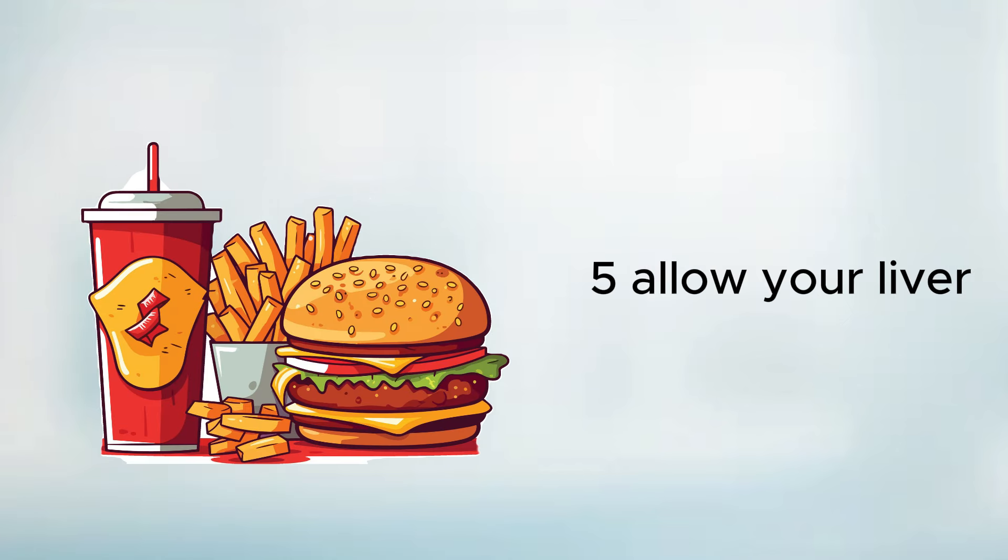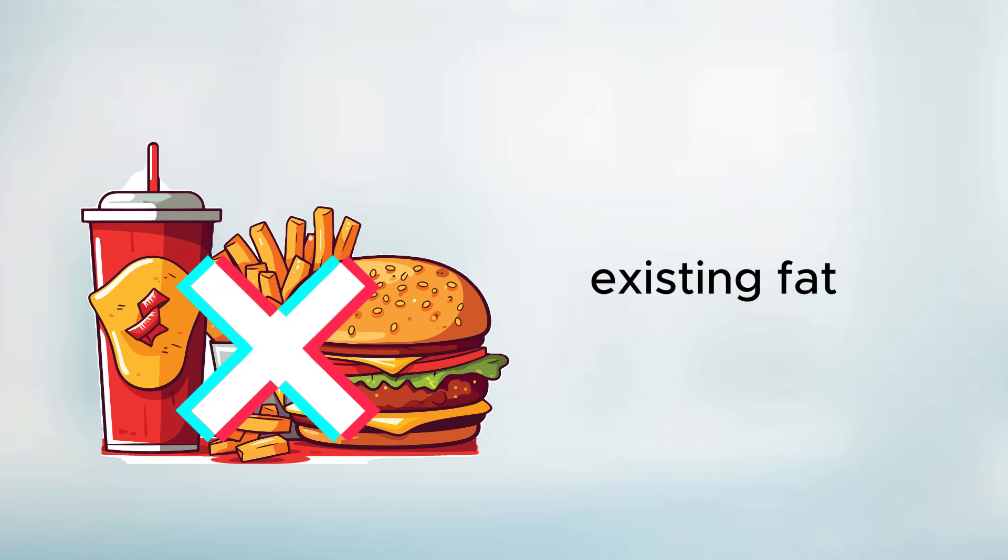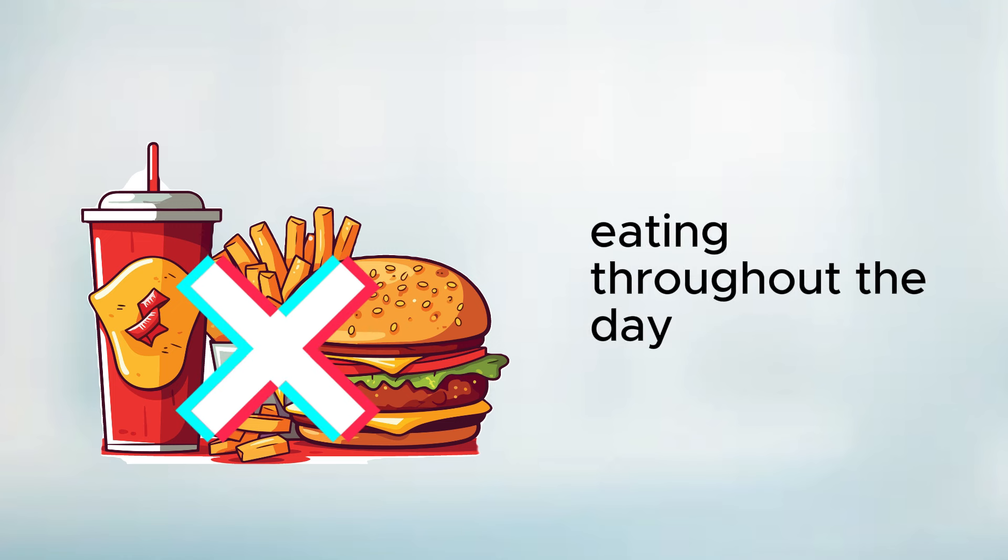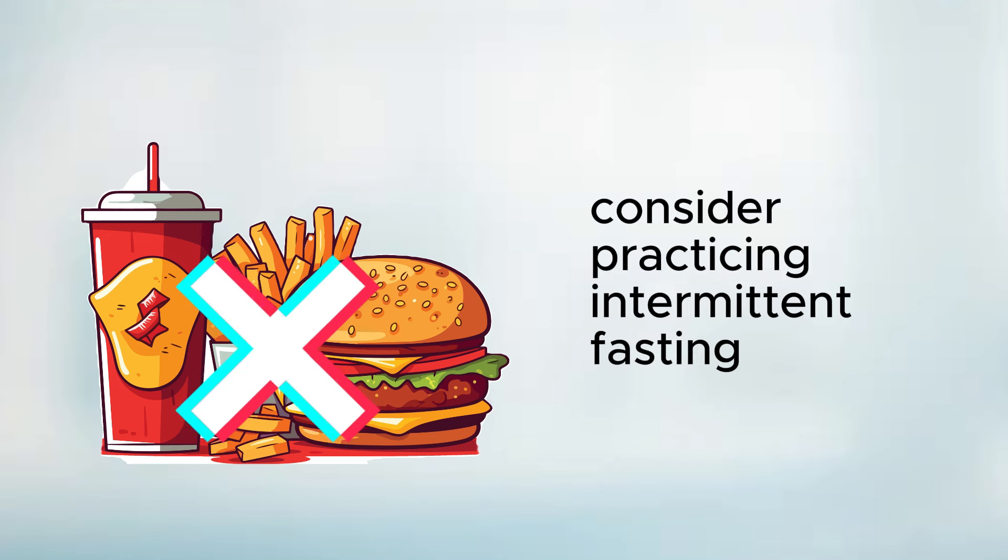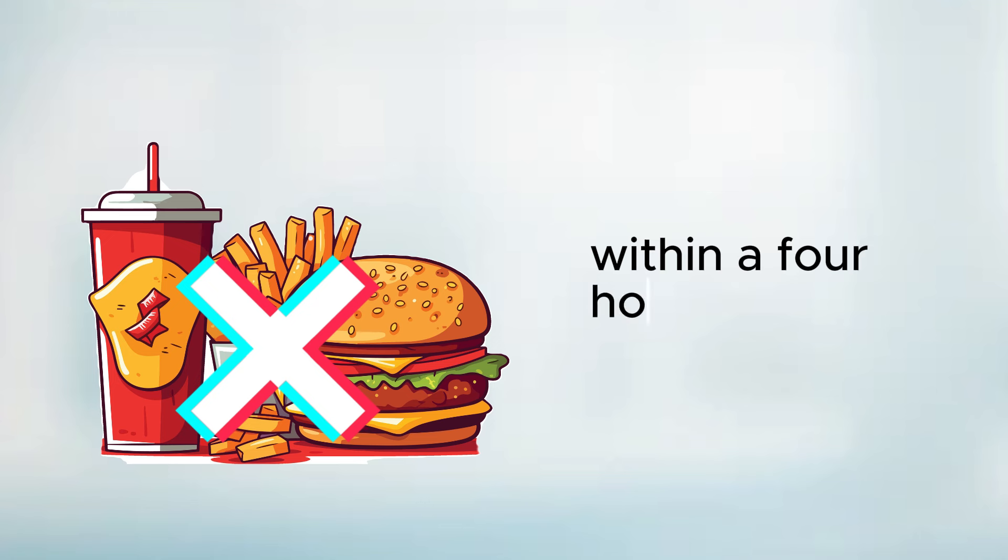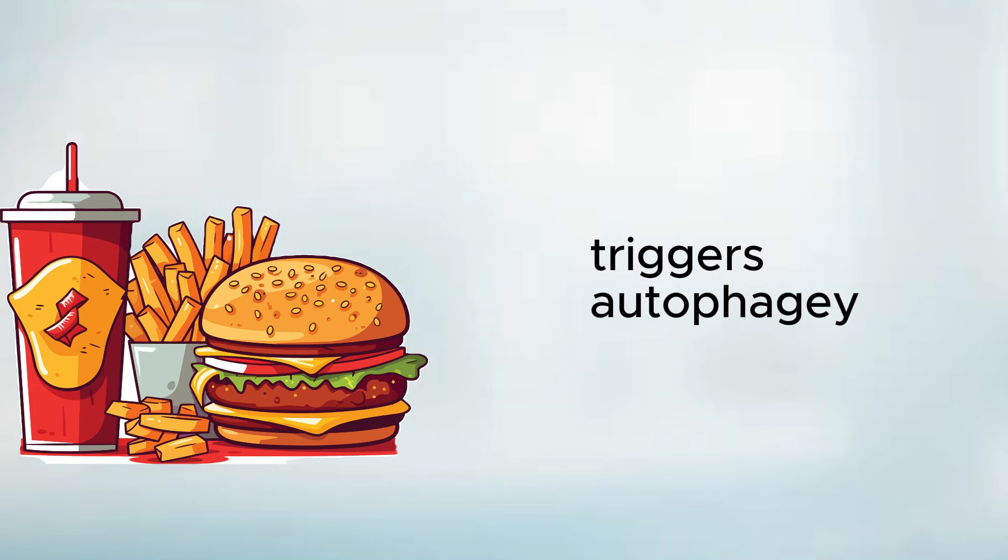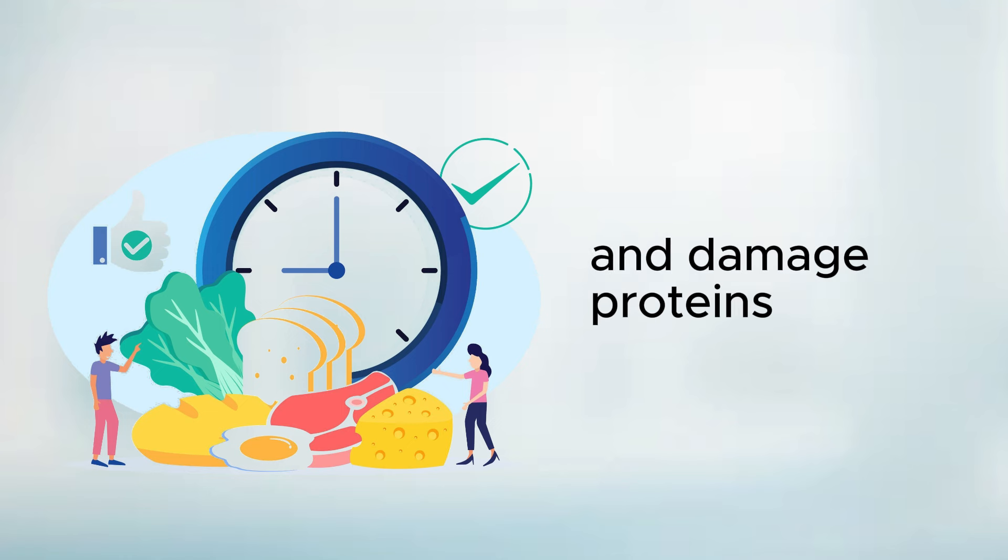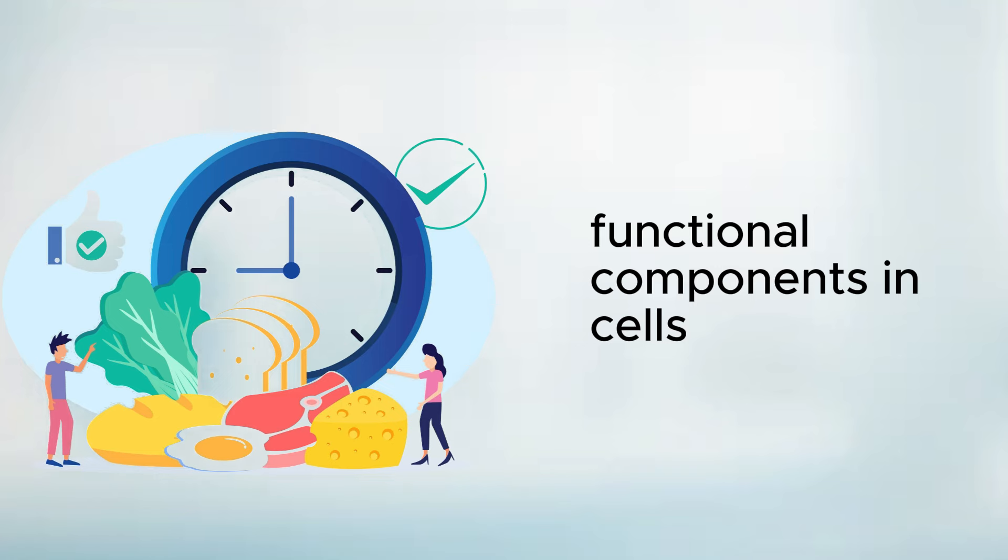Five, allow your liver adequate time to dissolve existing fat by refraining from frequent snacking and constant eating throughout the day. Consider practicing intermittent fasting where you consume all your daily calories within a four-hour window, followed by a 20-hour fasting period. This fasting approach triggers autophagy, a process where the liver recycles old scar tissue and damaged proteins, transforming them into new functional components in cells.